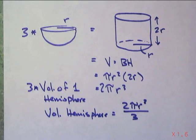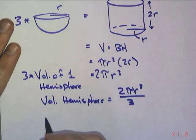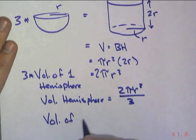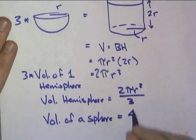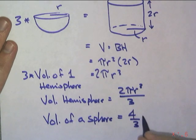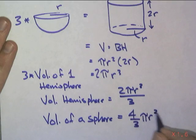That's one hemisphere. And if we want to find the whole sphere, that's two hemispheres, we just double that. So the volume of a sphere is equal to double that, or four-thirds pi r cubed.